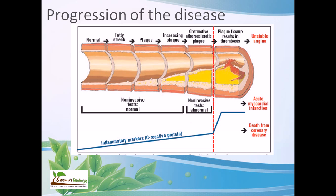There are non-invasive tests available to determine whether the disease is setting in or not. When the length and density of plaques is low, those non-invasive test results are found to be normal. But once the plaque density starts to rise, the tests show abnormal effects. As plaques build up more and more, they eventually rupture and red blood cells spill out. Once the red blood cells spill out, they start to coagulate and clog the arteries. You can see how much the diameter of the artery, which was previously normal, has now become very, very small due to all these problems.